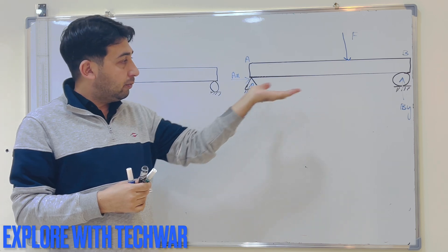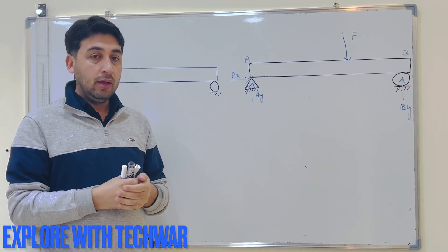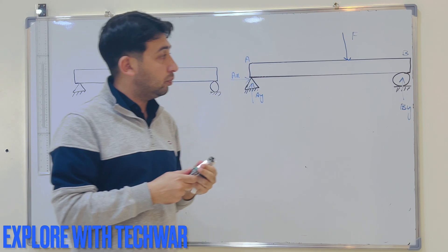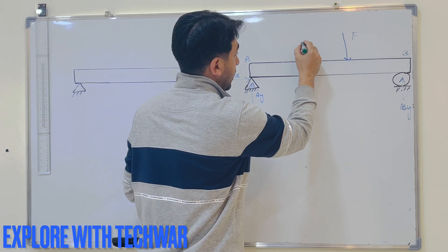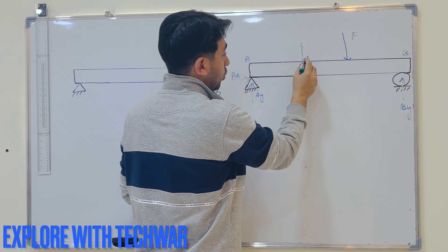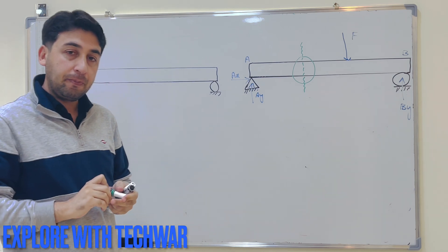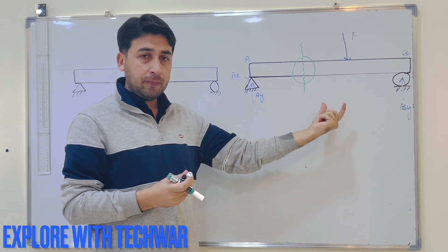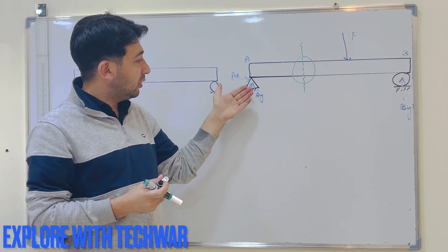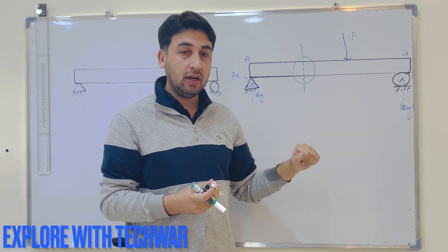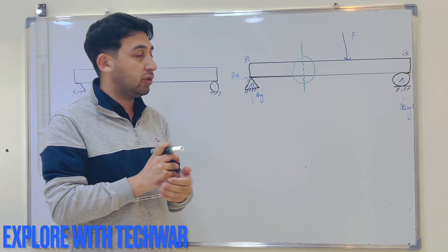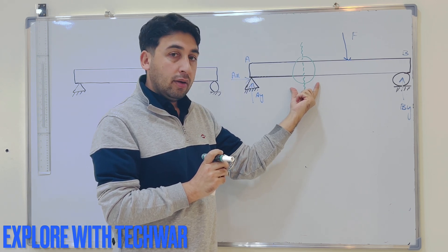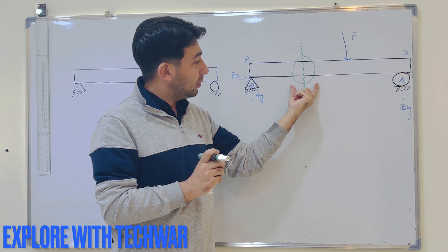The question is: if I apply this force here, what is happening to the beam at any cross section? At this region, I have a force acting on the beam from the top, and as a result I have reaction forces AY acting upward, BY acting upward, and AX — but there's no force in the X direction.